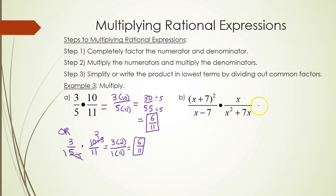Alright, part b. I'm going to write x plus 7 squared as x plus 7 times x plus 7 so we can see it a little better. The denominator cannot be factored in the first fraction. It's left as x minus 7.